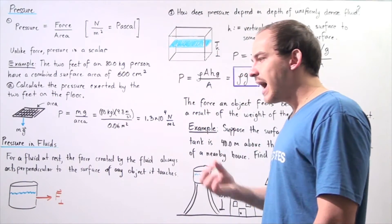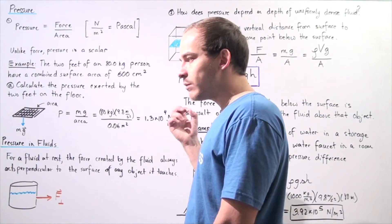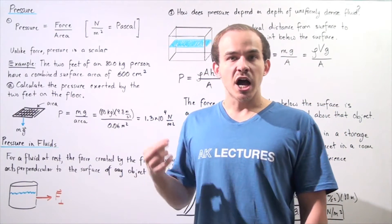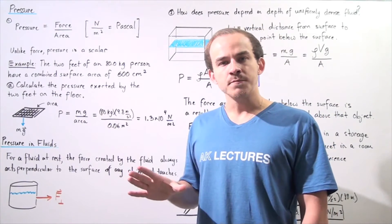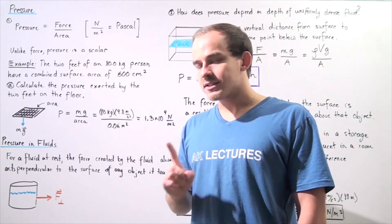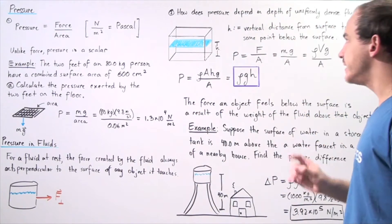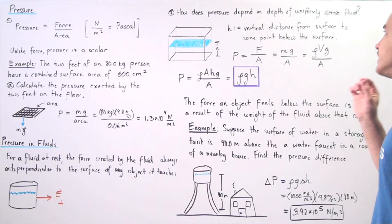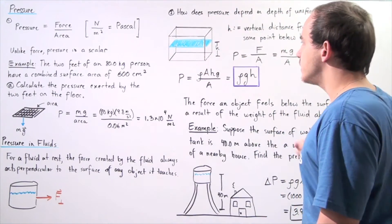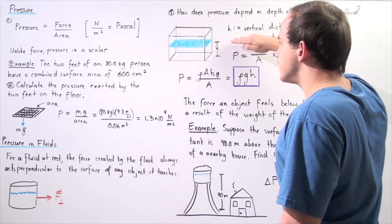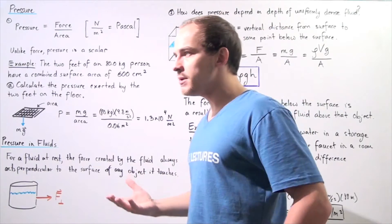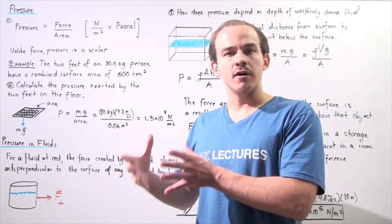From common knowledge, we know that if we place an object into a fluid, the pressure the object will feel as a result of the fluid will increase as we go deeper into the fluid. We want to ask: how exactly does pressure depend on the depth of a uniformly dense fluid? Let's suppose we have a container with a fluid at rest, and we want to find a relationship — a formula — between pressure and the depth of our fluid.